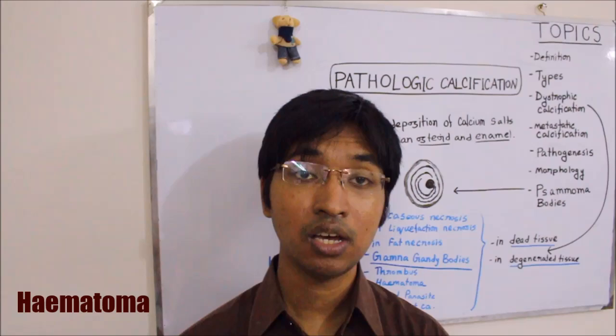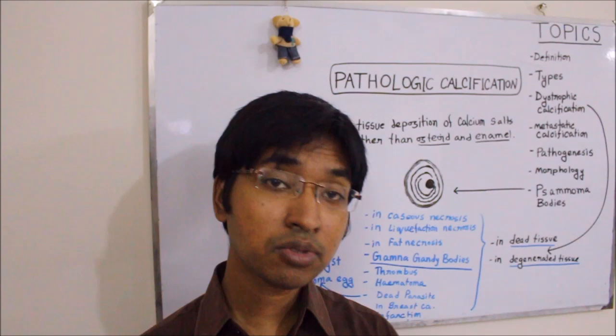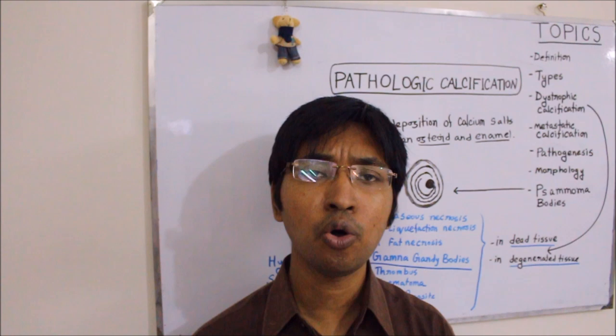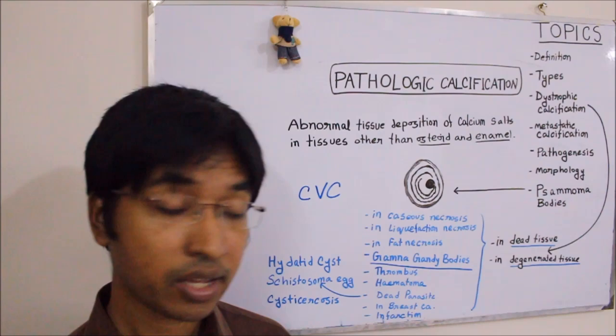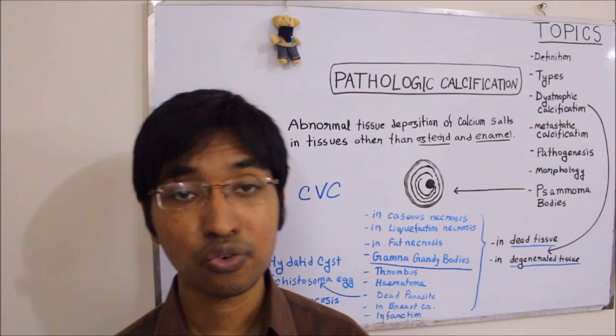The next example is in hematoma. Hematoma means accumulation of blood outside the blood vessels. Sometimes when a hematoma has occurred in close vicinity of a bone, the hematoma can get calcified, and that is another example of dystrophic calcification occurring in dead tissue. This can happen in hematoma when the hematoma is in close vicinity of bones.